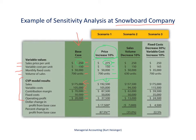If we did increase our sales price by 10%, then our total revenue, of course, would go up — assuming the units sold are the same. Our total revenue would go up to $192,500, which is $275 per unit times 700 units. Since we're selling the same number of units, the variable costs in total stay the same at $105,000.